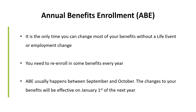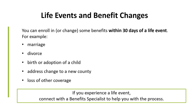Annual Benefits Enrollment, or ABE, is the only time you can change most of your benefits without a life event or employment change. You need to re-enroll in some benefits every year. ABE usually happens between September and October, and changes are effective January 1st of the next year. Life events — such as marriage, divorce, birth or adoption of a child, address change to a new county, or loss of other coverage — allow you to enroll in or change some benefits within 30 days. If you experience a life event, connect with a benefits specialist for help.